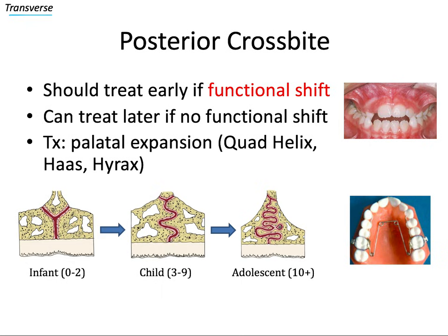We should treat posterior crossbite early if there's a functional shift — meaning when the patient first bites together some teeth touch but not all, and as they close further their mandible shifts left, right, forward, or back. This is a problem because habitually moving the jaw forward or asymmetrically can stimulate condylar growth and contribute to a skeletal malocclusion. In these cases it makes sense to intervene early, around age six to nine once the permanent first molars are in, but also while the mid-palatal suture is still pliable, before it becomes more interdigitated and harder to open.